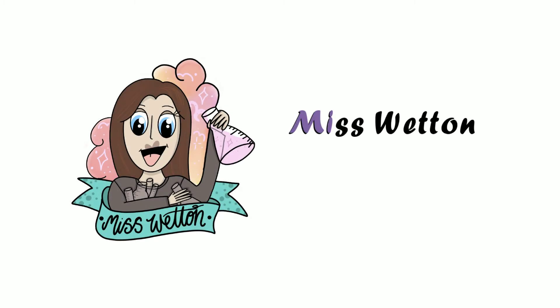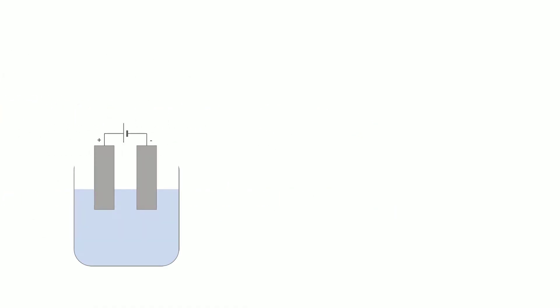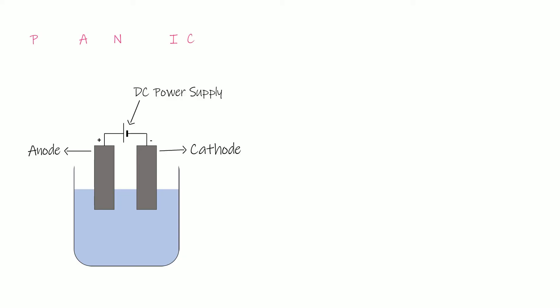Hello everyone, welcome to Miss Wetton's Science Revision. In this video we're going to look at how to predict the products of electrolysis when our electrolyte is either molten or an aqueous solution. A quick recap of the electrolysis setup: we've got our DC power supply connected to our two electrodes, the anode and the cathode. The anode is positive and the cathode is negative — we remember that using the phrase PANIC, which stands for Positive Anode, Negative Is Cathode. Write it down if you don't know it off by heart, because you're going to need it later.